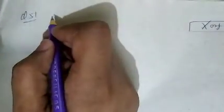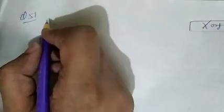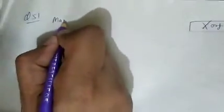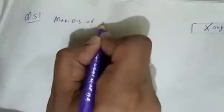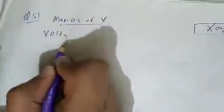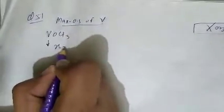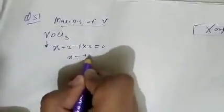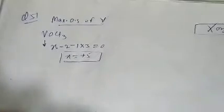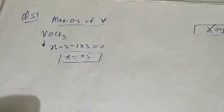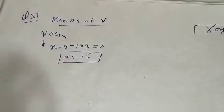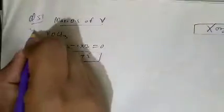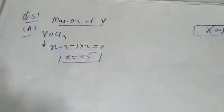Question number 51: which of the following exhibits the maximum oxidation state of vanadium? In VOCl3, let the oxidation state of vanadium be X. Oxygen is minus 2 and chlorine is minus 1, so X equals plus 5. The maximum oxidation state of vanadium is present in VOCl3. Question 51, option A is correct.